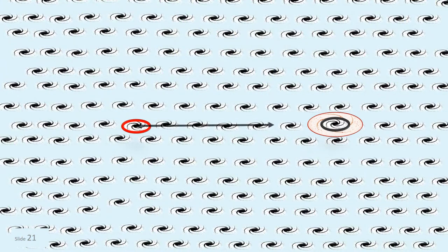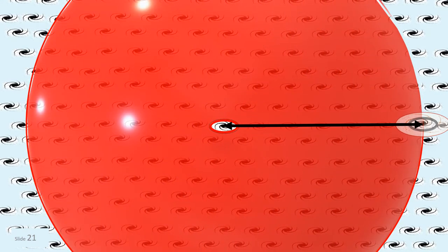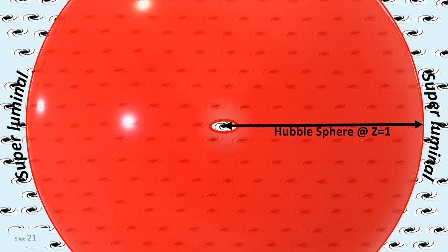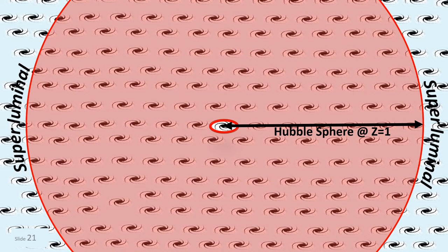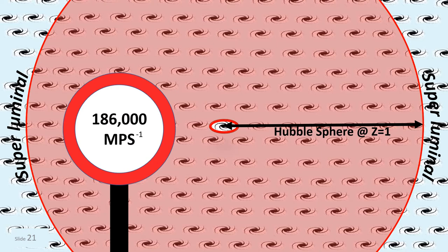Z1 is the distance that galaxies have an apparent recessional velocity equal to the speed of light. This is called the Hubble sphere. Everything beyond the Hubble sphere is superluminal, and because nothing is actually moving due to the apparent expansion, nothing is actually exceeding the universal speed limit.